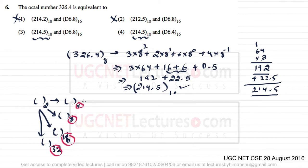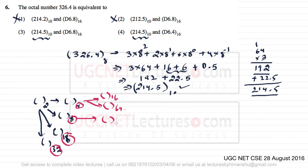Converting between powers of 2 is easy — for example, base 4 to base 16, or base 8 to base 64. Similarly, converting base 8 to base 2 and back is straightforward. To convert a base 8 number to base 2, you write every digit as a group of 3 bits. For the number 326.4, we apply this method.